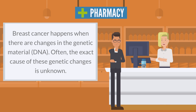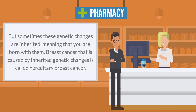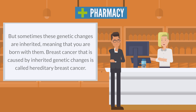Breast cancer happens when there are changes in the genetic material, DNA. Often, the exact cause of these genetic changes is unknown. But sometimes these genetic changes are inherited, meaning that you are born with them. Breast cancer that is caused by inherited genetic changes is called hereditary breast cancer.